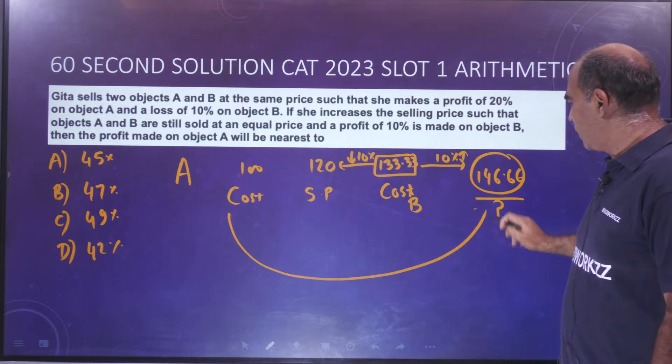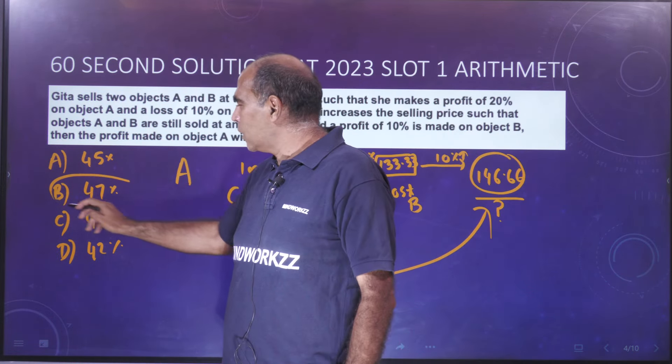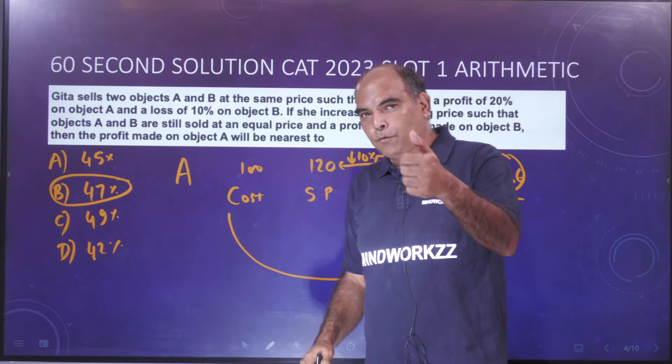Your cost was 100, selling price 146.66, nearest to 47%. Two thoughts, you get through. Do follow for more.